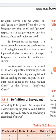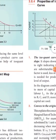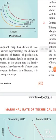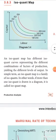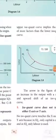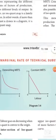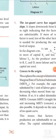The isoquant curve is also called the equal product curve or product indifference curve. A group of different isoquant curves, each representing different combinations of factors of production yielding different levels of output, is called an isoquant map. Today we will study the properties of the isoquant curve.